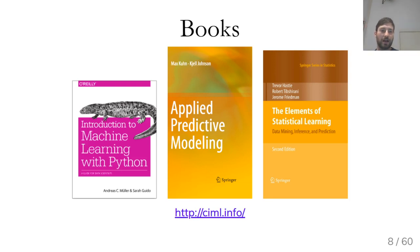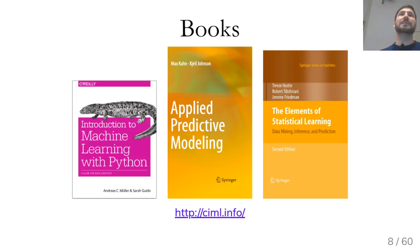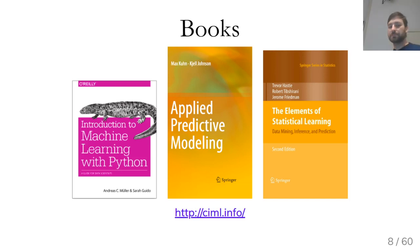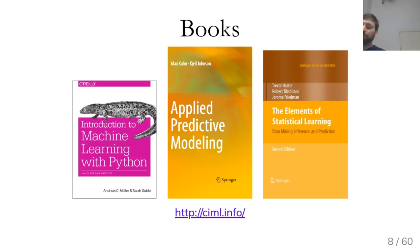Two other books I highly recommend: Applied Predictive Modeling by Max Kuhn, which is R-based but still mostly applicable to Python, and The Elements of Statistical Learning, which is more theoretical with more math and background — good if you want to understand the algorithms more deeply. There's also another book at ciml.info by Hal Daumé, a researcher at Microsoft in New York.